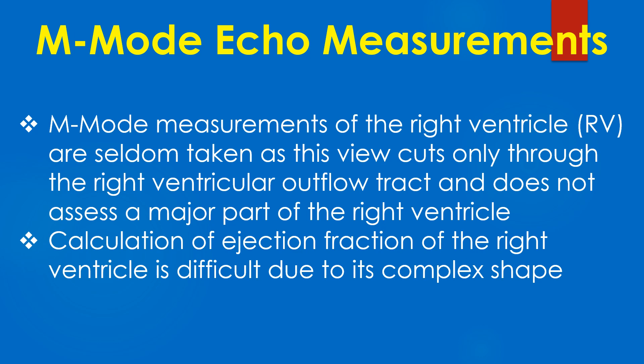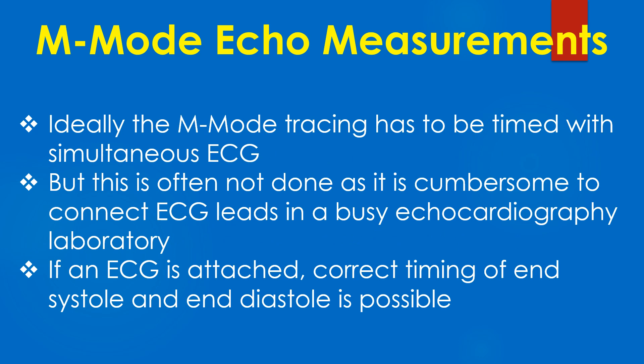Calculation of ejection fraction of the right ventricle is difficult due to the complex shape. Ideally, the M-mode tracing has to be timed with simultaneous ECG. But this is often not done as it is cumbersome to connect ECG leads in a busy echocardiography laboratory. If an ECG is attached, correct timing of end systole and end diastole is possible.